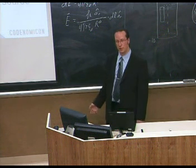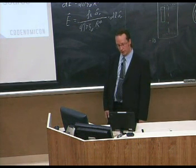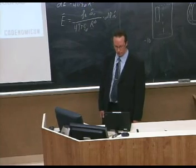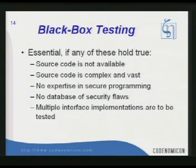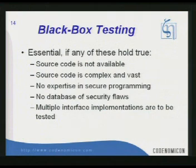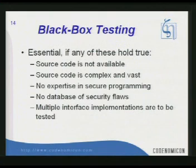You can have checklists, you can have courses on secure programming, and different kinds of means of collecting data from past experiences. Basically, they look for structures in code that are known to be problematic. In black box testing you don't have the source code, or it's just too huge to go through using code auditing tools. Many of the code auditing tools generate so many false positives — alarms that are not true — that you spend all your time reviewing those. It's impossible if you start at late phases of the software development project with a huge amount of code.